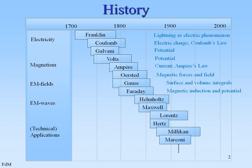Then Faraday made magnetic induction and potential. Around 1850 there was Helmholtz, who introduced the magnetic fields, and then Maxwell came and unified electric and magnetic fields in his field equations.